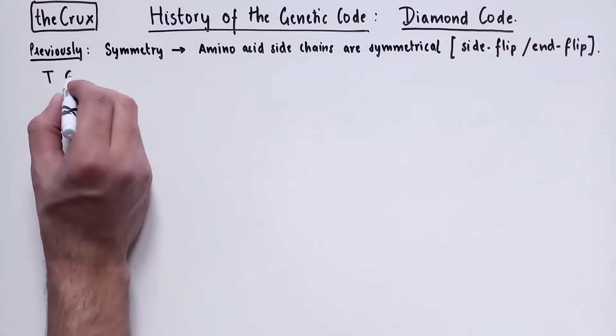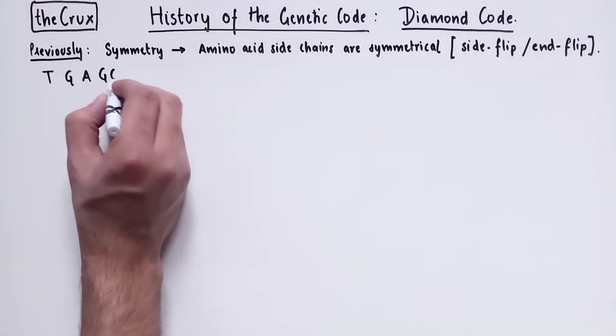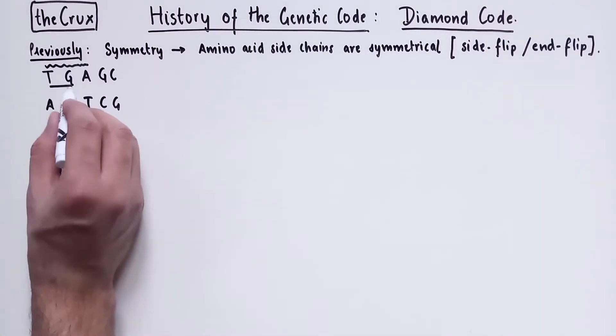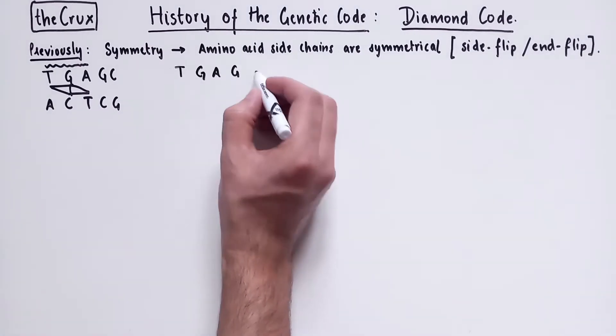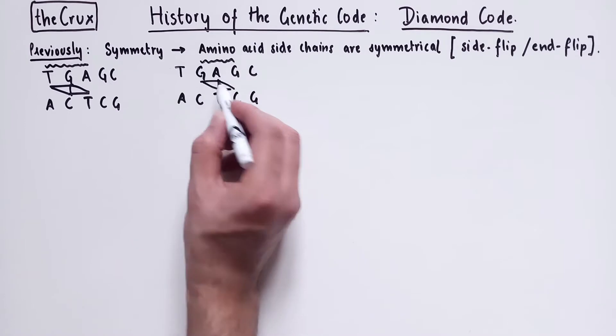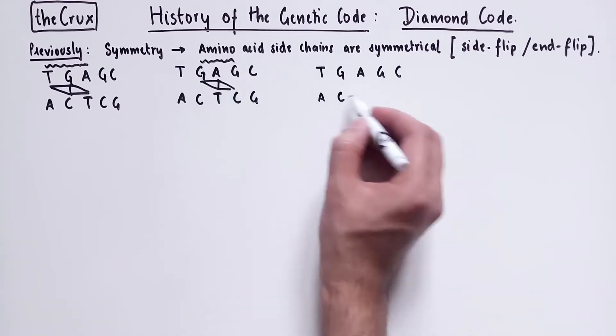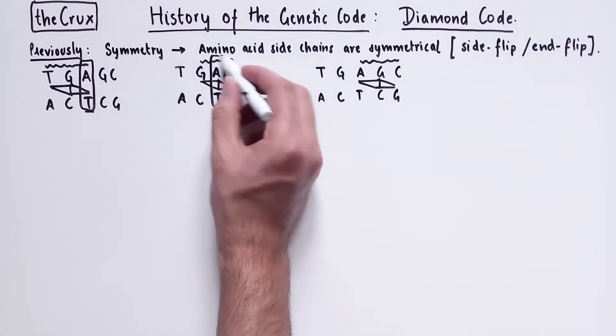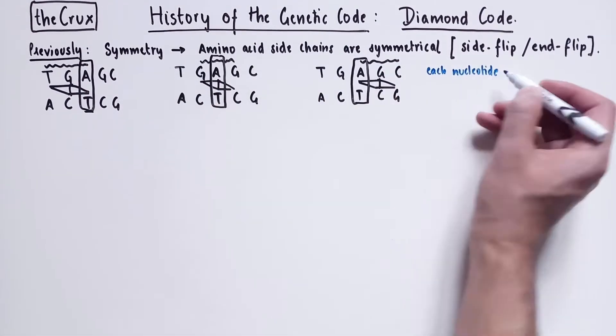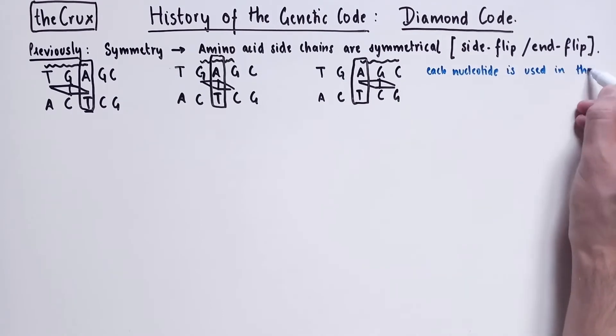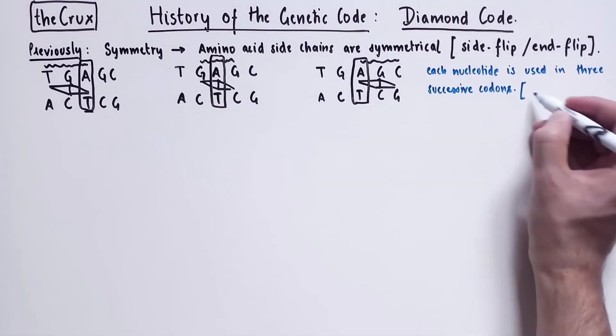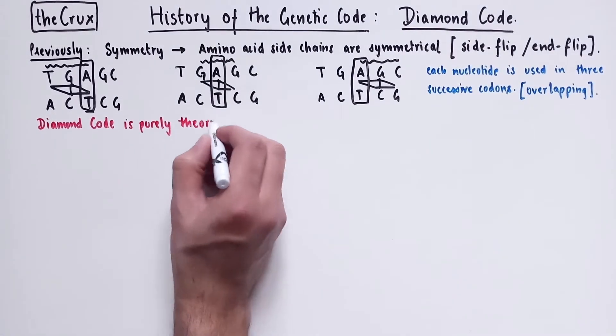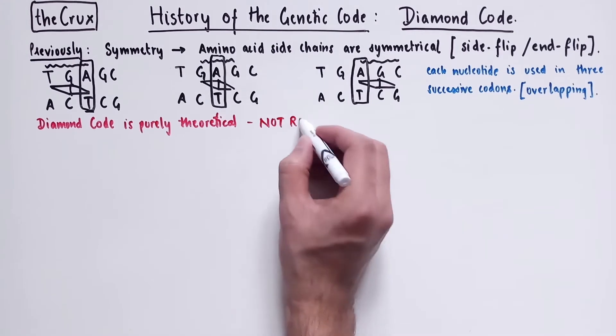We can get a brief refresher of this diamond code by looking at this example. So if you have this stretch of DNA, you have TGA coding for the first amino acid, then next codon begins immediately at the second base, so you have GAG codon. And then finally you have AGC as the last codon. And in this code on average, each base here for instance A or T is used in three successive codons. And this is why diamond code is also an overlapping code. But one important thing to keep in mind is that the diamond code is purely theoretical, so it's not a real genetic code.